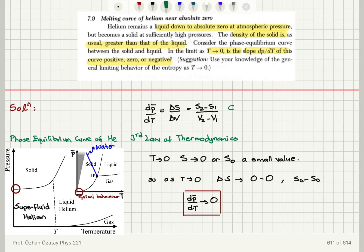And Clausius-Clapeyron equation tells us that the slope of the phase equilibrium curve is given by delta S over delta V per particle or per mole, and it will be approaching zero.